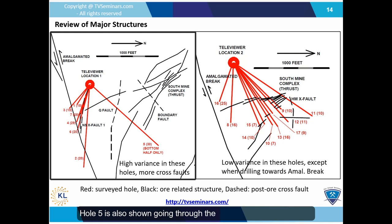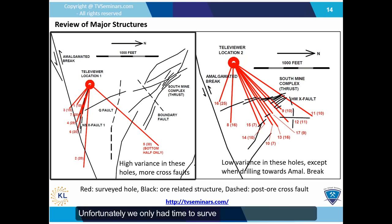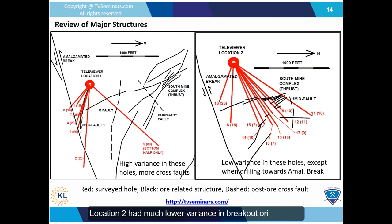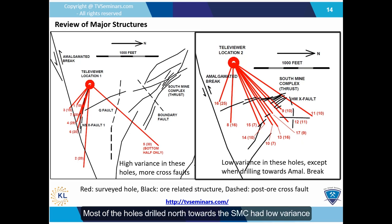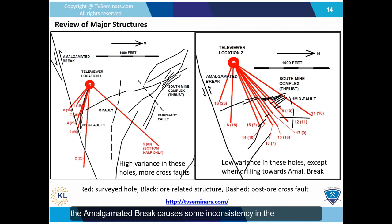Hole 5 is also shown going through the lower abutment of the SMC, and passes through structures that make up the lower branch of the SMC as well as the Q fault, which is a known source of fault slip seismicity. We only had time to survey the bottom half of this hole, but the high variance in breakout orientations suggests some kind of structural influence. Location 2 had much lower variance in breakout orientations, except when we drilled south towards the amalgamated break. It seems like the further south we drill, the more inconsistent our results get, suggesting the amalgamated break causes some inconsistency in the stress tensor or the rock mass near it has some weakness angle that affects breakout orientations.